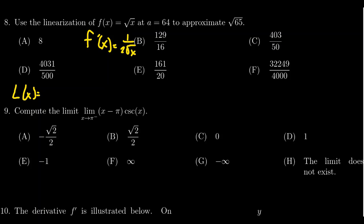We need to evaluate this at a = 64. So f'(64) = 1/(2√64). The square root of 64 is 8, so we get 1/(2 × 8) = 1/16. That's the slope of this line.